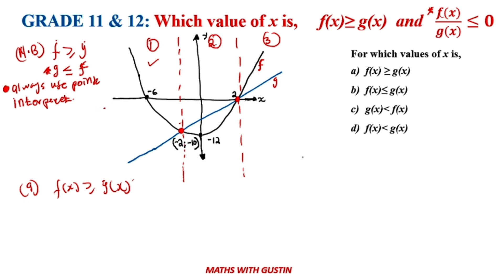In stage two — the middle region — g(x) is on top of f(x), so that part doesn't work. In stage three, f(x) is on top of g(x) again, so that works. It alternates: works, doesn't work, works — like left, right, left. So stages one and three satisfy f(x) ≥ g(x).